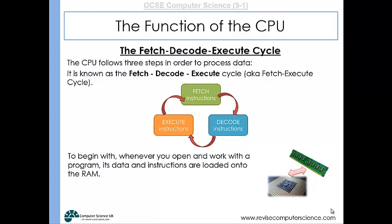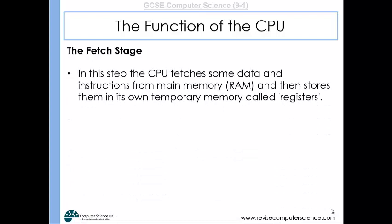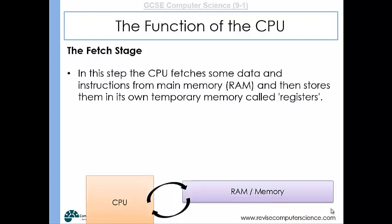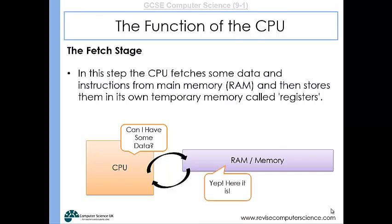So how does it do it? Well first of all, as we just talked about, the CPU will fetch instructions from the RAM. And when it fetches the instructions, it will fetch several instructions and then store them in its own little temporary memory storage area called registers. So this is shown as an example of the CPU asking for some data and then the RAM delivering that data back, so it gets stored in the CPU.